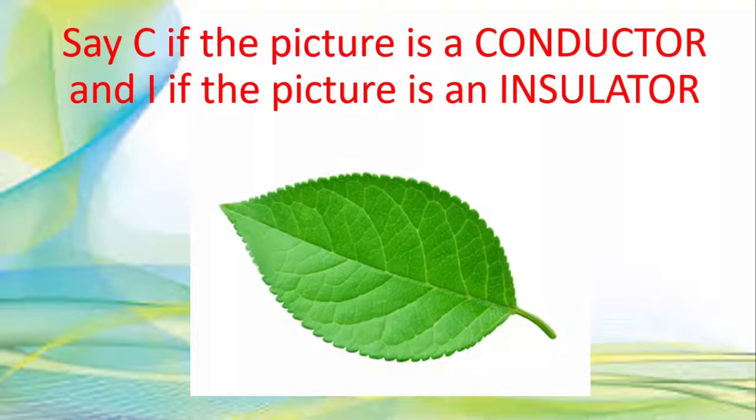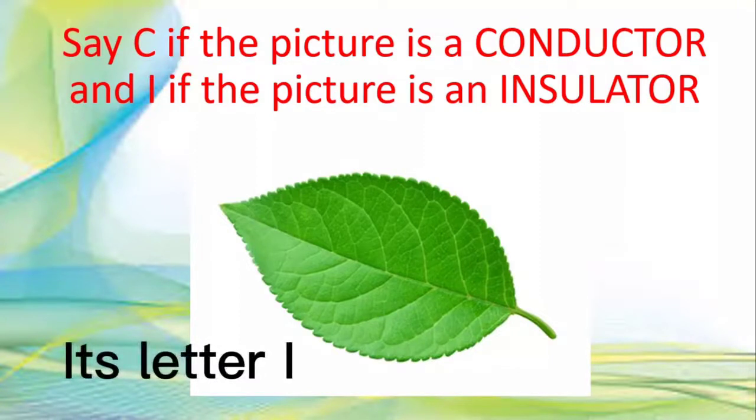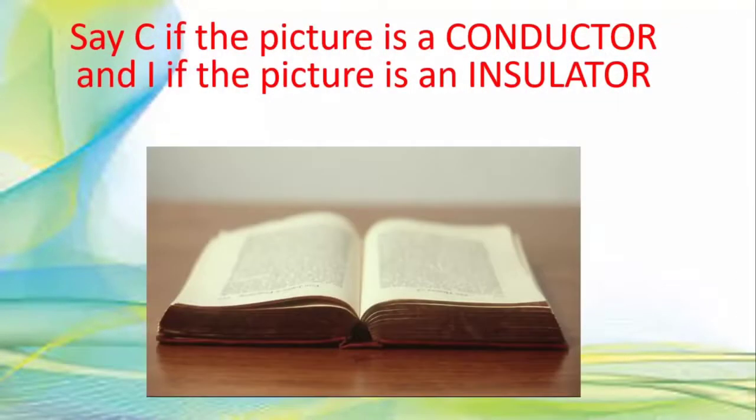Let us have now an activity. Say C if the picture is a conductor and I if the picture is an insulator. Very good! It is letter I. Leaves do not allow the heat to pass through. It is an insulator.